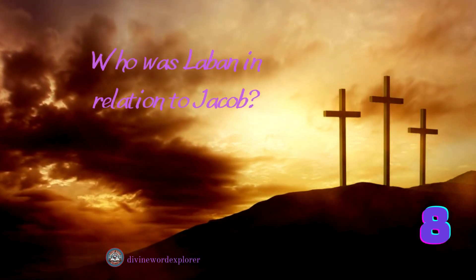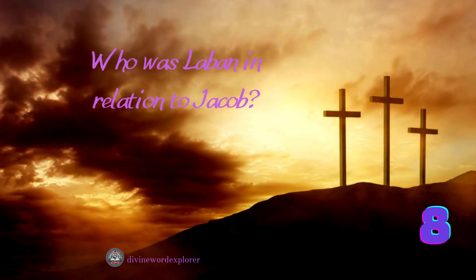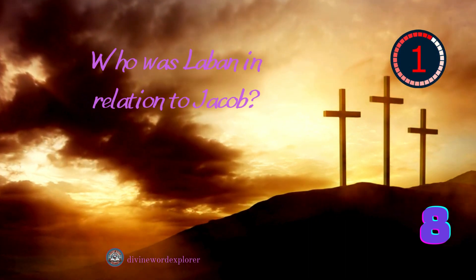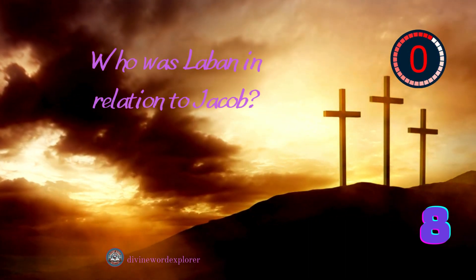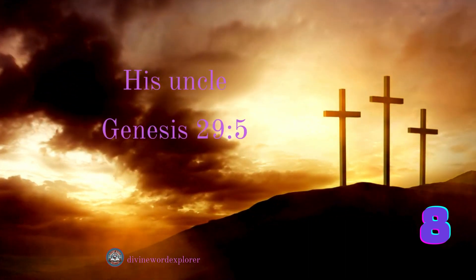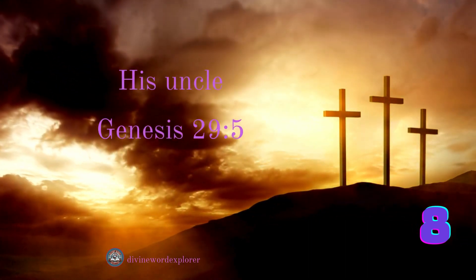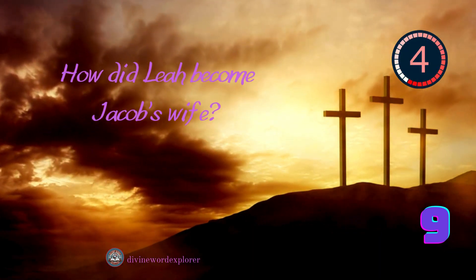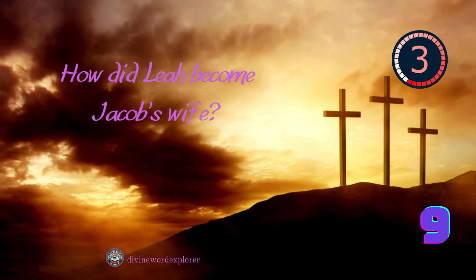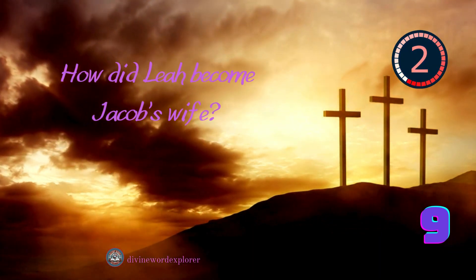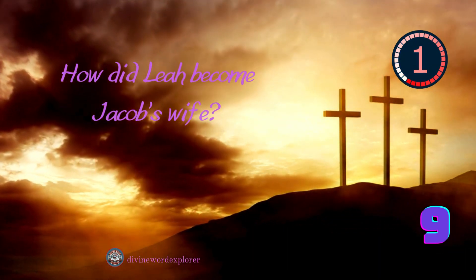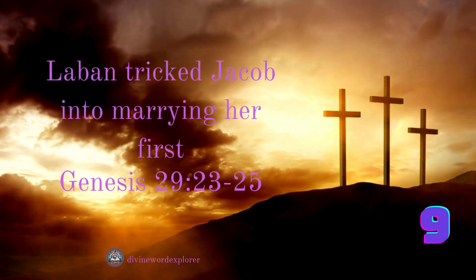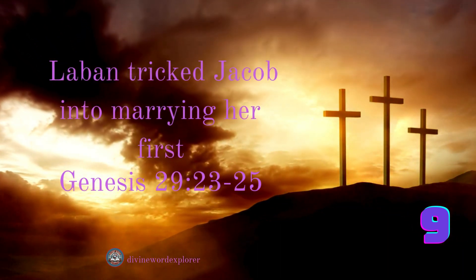Who was Laban in relation to Jacob? Answer: His uncle. How did Leah become Jacob's wife? Answer: Laban tricked Jacob into marrying her first.